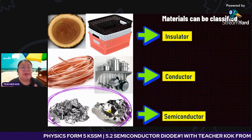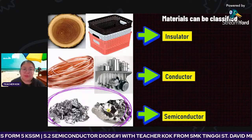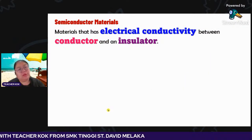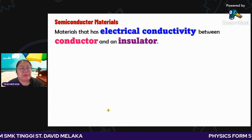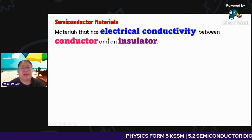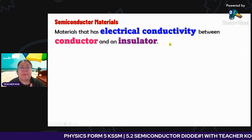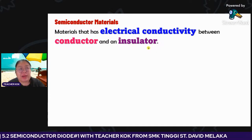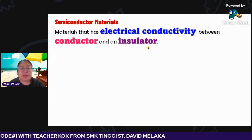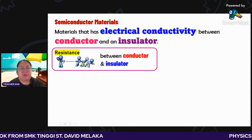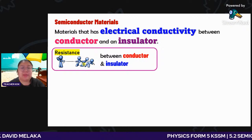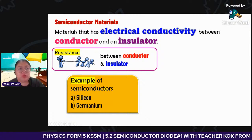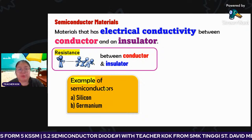Today we need to concentrate on the semiconductor. We're going to see the introduction and explanation of definitions. Semiconductor material has electrical conductivity between the conductor and the insulator — not perfect like the conductor, but better than the insulator. Their electrical resistance is between conductor and insulator. Examples of semiconductors: silicon and germanium. Remember these two names.